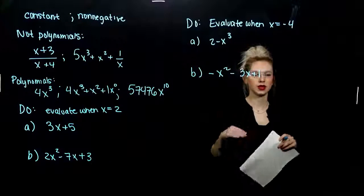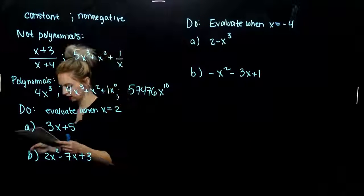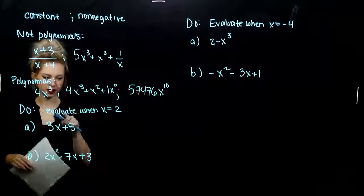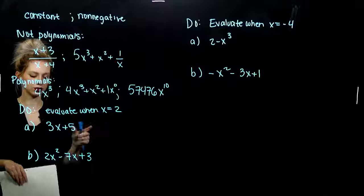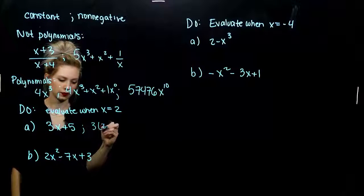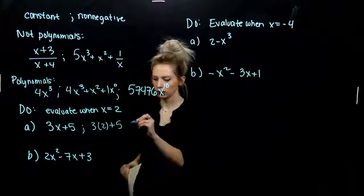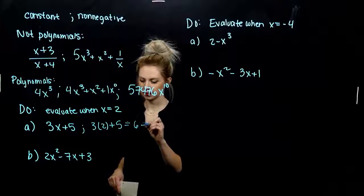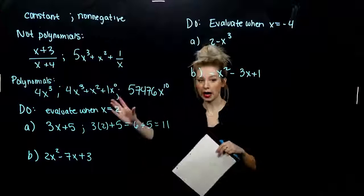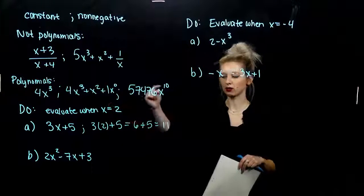We want to look at a few different cases and start evaluating polynomials when we're given a variable value. The first one: evaluate these polynomials when x is equal to 2. Wherever I see an x, I'm going to throw in a 2. So, the first one, what are we looking at? 3 times 2 gives me 6, and I'm adding 5. I get 11. For that specific polynomial, when I plug in 2, I get out 11.